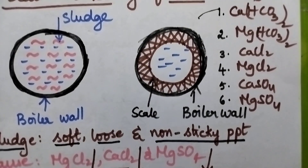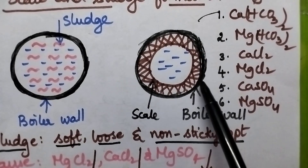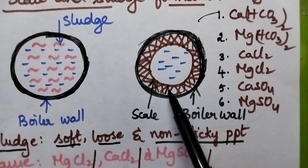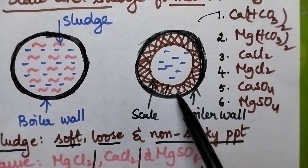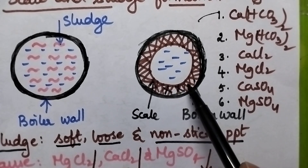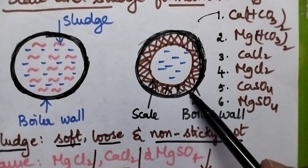Scale means a hard, sticky precipitate formed on the inner walls of the boiler. It is a sticky precipitate that sticks onto the boiler walls.